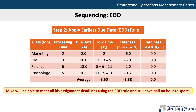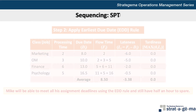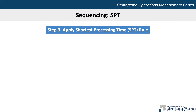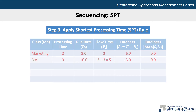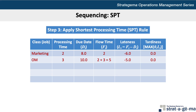If Mike scheduled his assignments according to the earliest due date, he would be able to meet all of the deadlines and still have half an hour to spare. Now let's see how this will look if Mike sequenced his assignments based on the shortest processing time, or SPT rule. We'll use the same table format and calculations. Based on processing time, the marketing and OM assignments at 2 and 3 hours respectively would be completed in that order, so the due dates, flow times, lateness, and tardiness are the same up to this point as the EDD rule.